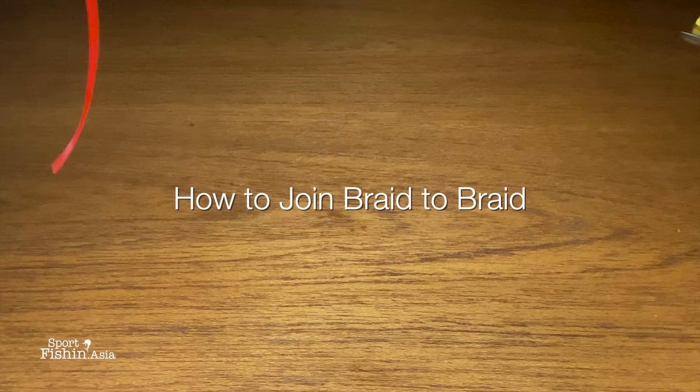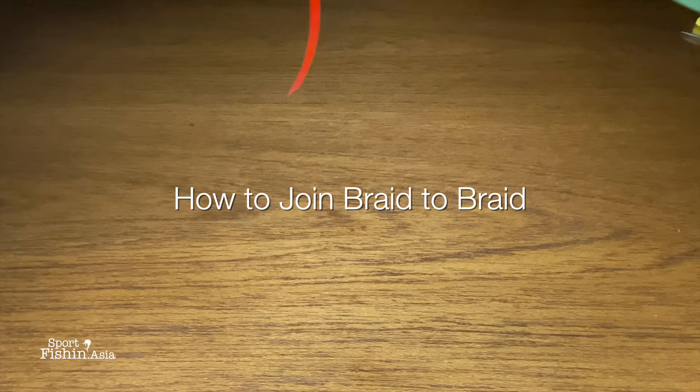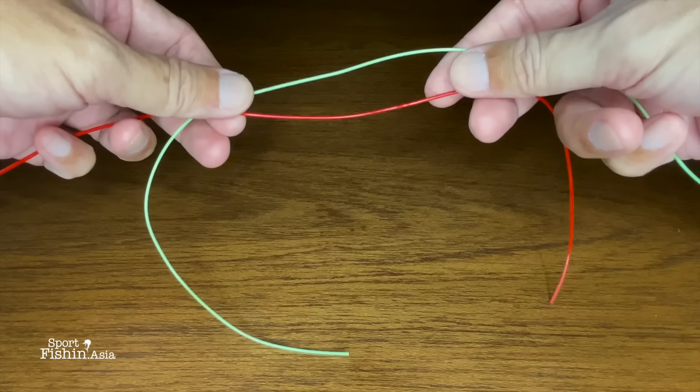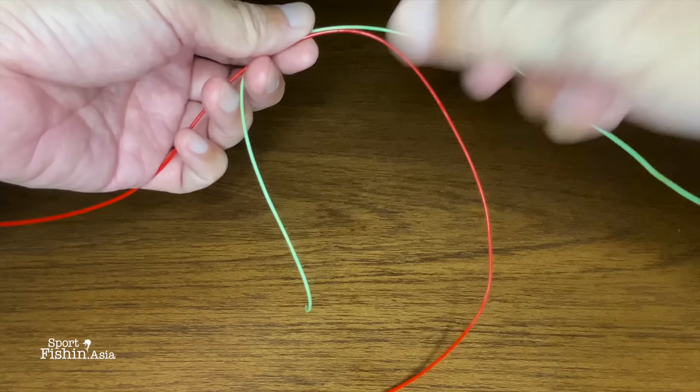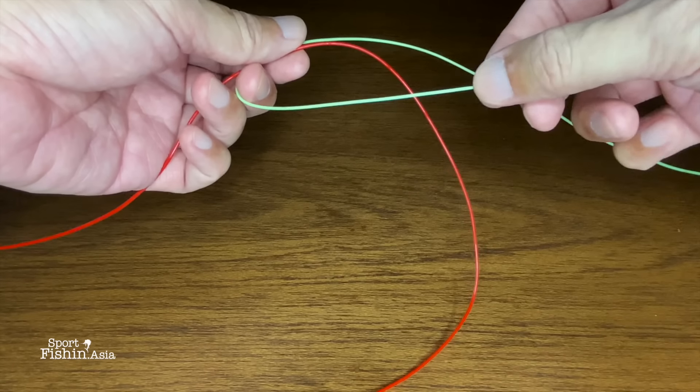First I'm going to show you using thicker lines and different colors so it's easier for you to see, and then later I'll show you with the actual braided lines. You put both lines across one another pointing in different directions.